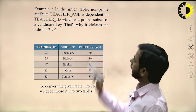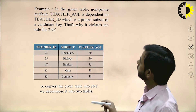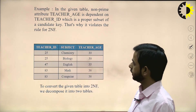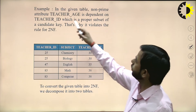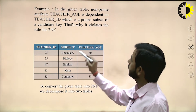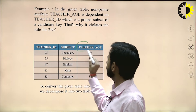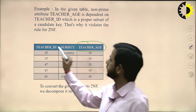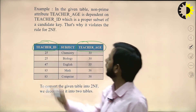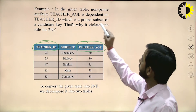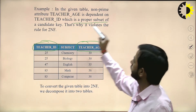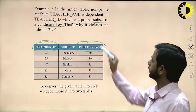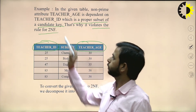In the given table, the relation has attributes: teacher ID, subject, and teacher age. The non-prime attribute teacher age is dependent upon teacher ID, which is a proper subset of the candidate key. That is why it violates the rule of 2NF.